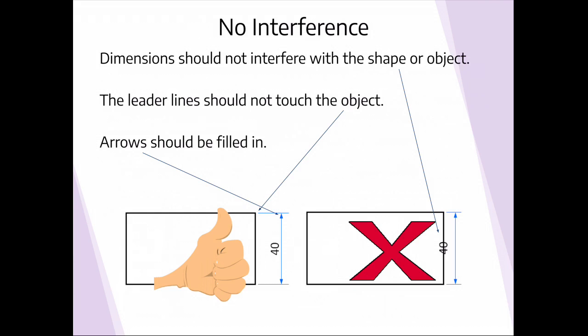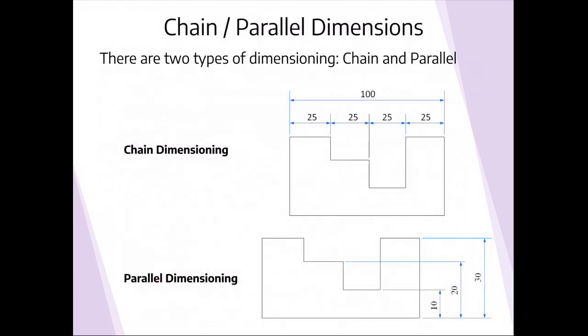The leader lines also don't touch the object. The reason for this is to make sure that nobody confuses the leader lines for being part of the object. And lastly what we also need to remember is that the arrowheads should be small, they should be neat, they should be slim and they should be filled in as well. It shouldn't be open arrowheads, they should be closed off, they should be coloured in and they don't need to be really large in size.